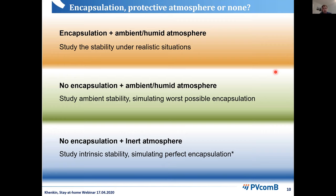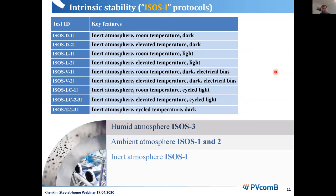Another approach is to not encapsulate and try to develop devices stable in ambient even without encapsulation. A third approach is to use an inert atmosphere — less realistic, but very useful at the research level because it helps separate different degradation factors from each other. These inert atmosphere experiments are now included in the protocols, especially because more and more groups have the capability to run stability tests in a glovebox or nitrogen-filled sample holders. They are marked with the index 'i'.